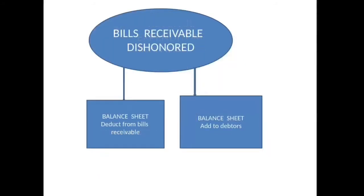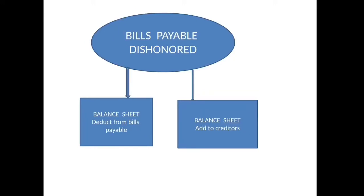Bills receivable is our asset. If it is dishonored, that means we are not going to get any payment from the bill. First effect: deduct it from bills receivable in the balance sheet. Second effect: add it to debtors, because your debtors have increased by the amount of the bill receivable dishonored. Next, bills payable dishonored: bills payable is your liability. Deduct from bills payable on the balance sheet liability side, and add it to creditors — also on the balance sheet liability side.